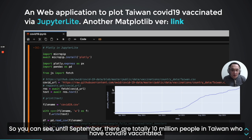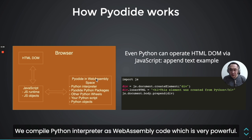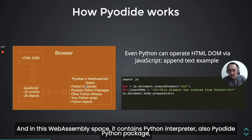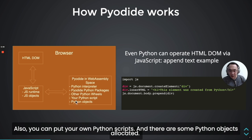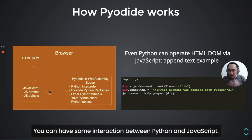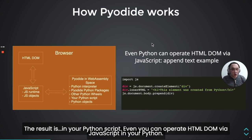You can see that until September, there are totally 10 million people in Taiwan who have been vaccinated. That's how PyDai works. The theory is very simple: we compile the Python interpreter as WebAssembly code. In this WebAssembly space, it contains the Python interpreter, PyDai Python packages, as well as other Python wheels. You can put your own Python scripts, and there are Python objects allocated. You can have interaction between Python and JavaScript, and between JavaScript and HTML DOM. So in your Python code, you can even update HTML DOM via JavaScript.